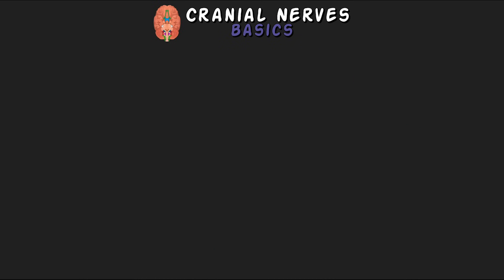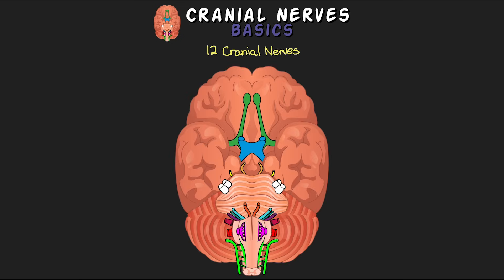Each of the 12 cranial nerves has been color-coded to make them easier to identify. As we talk about each cranial nerve, the same color used on the diagram will help identify exactly where on the brain we're referring to.